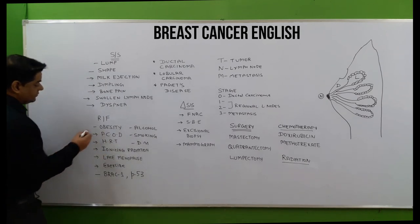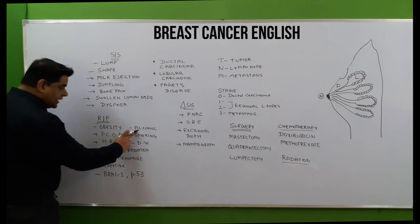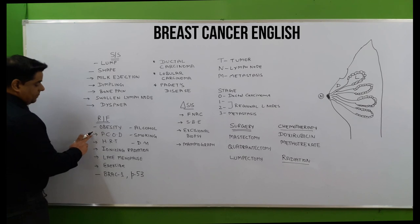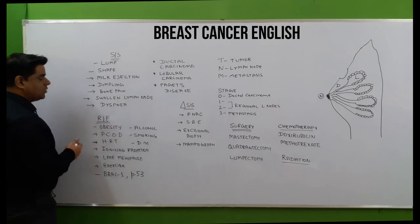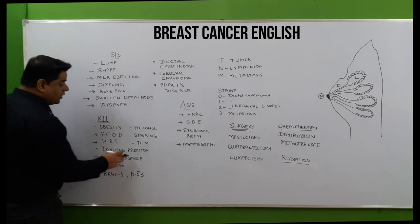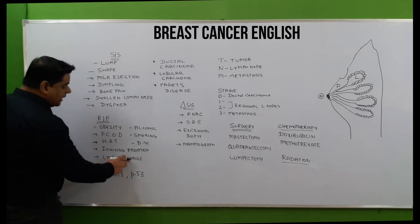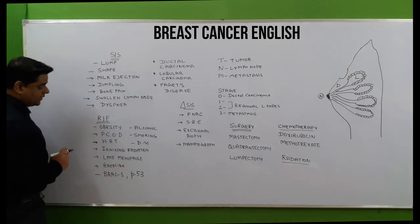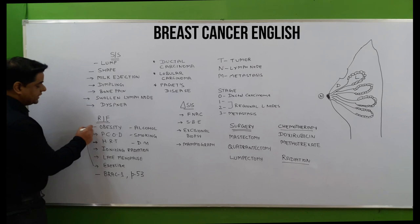The risk factors include obesity, alcohol intake, smoking, PCOD (polycystic ovarian disease), hormonal therapy — such as hormones taken during menopause or for ovulatory purposes — ionizing radiation such as X-rays and alpha, beta, and gamma rays, as well as late menopause and lack of exercise.